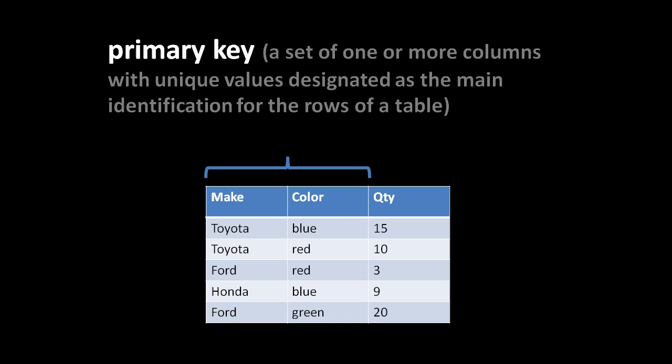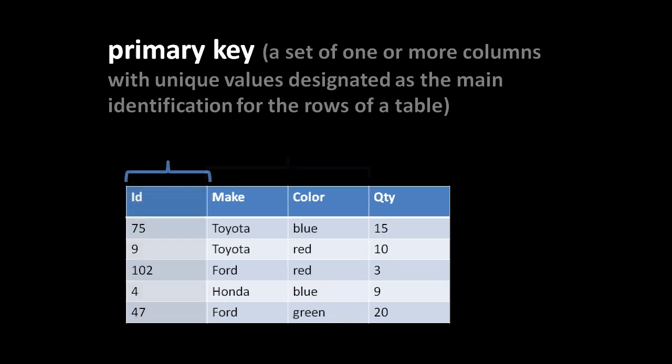In real-world practice, it's by far most common to give each table its own id column containing a unique arbitrary integer, and it's these id columns which are most commonly used for primary keys. There's really no relationship between the id value and the content of that row — it's totally arbitrary. The only important thing is that it stays constant for that row.